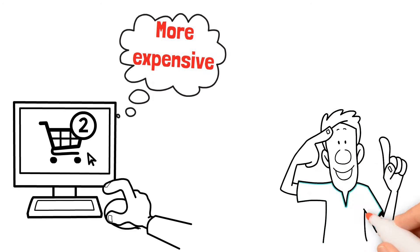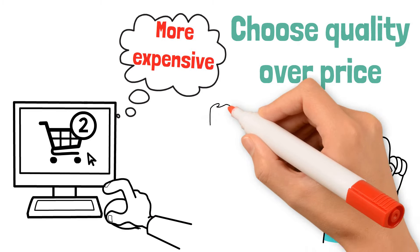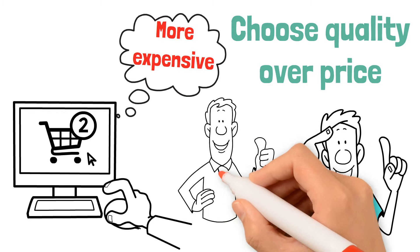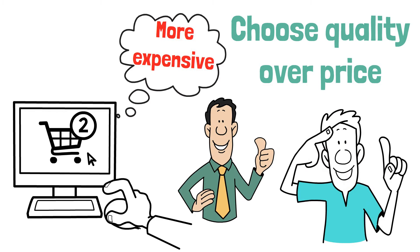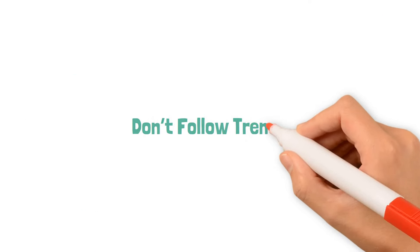So the next time you're out shopping, remember this Buffett tip, choose quality over price. This way you're not only saving money, you're also embracing a more sustainable way of living. Next key tip for saving more and living frugally is don't follow trends.